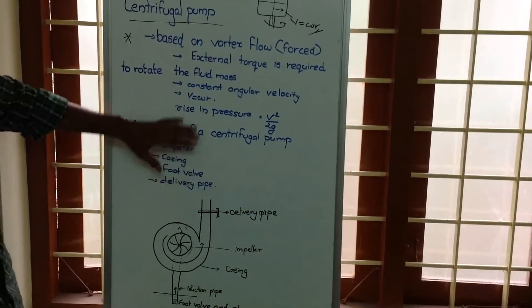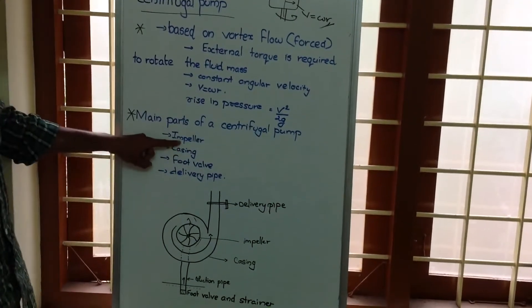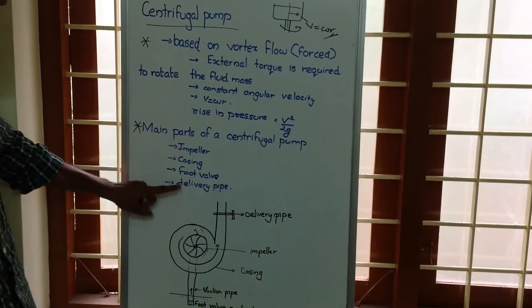So in centrifugal pump, we are using this concept. The parts of centrifugal pump are impeller, casing, foot valve, and delivery pipe.